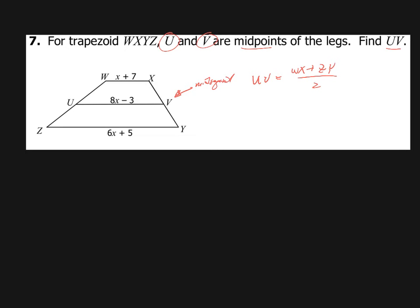So we take that statement, and instead of writing UV, I'm going to write what UV is worth. 8X minus 3 equals, and I'm going to put this over 1. It's going to be equal to X plus 7. That's WX plus ZY, which is 6X plus 5, half of that.